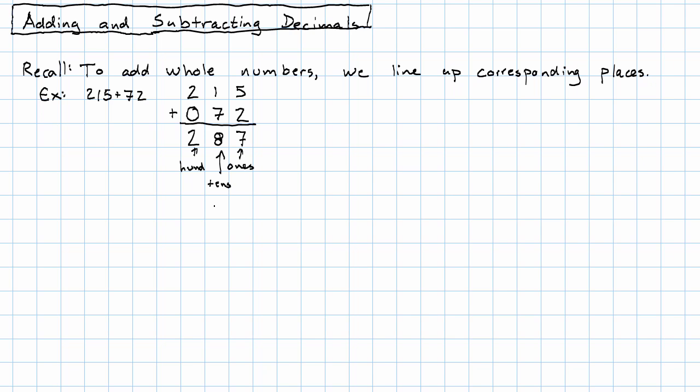We do the same thing when we add decimals. So for example, if we want to add 7.43 plus 0.128, we'll line up the ones, line up the tenths, the hundredths, and the thousandths.